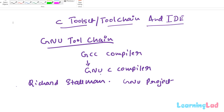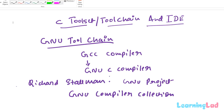When GCC was first created it supported only the C language, which is why GCC meant GNU C compiler. But over time it has grown to support many languages such as C++, Objective-C, Fortran, Ada, and many more. That is why GCC now stands for GNU Compiler Collection.